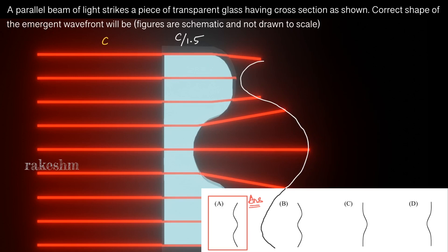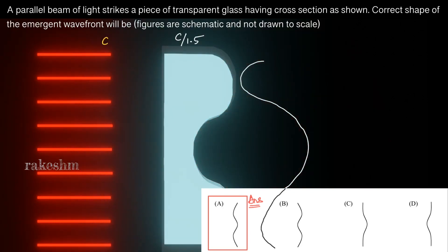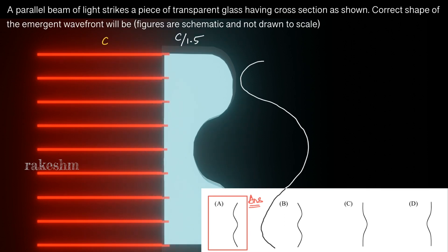One more question: in the exam, if he had said 'draw the possible wavefronts after the light strikes the plane surface of the glass' — so let us again visualize the path that the light rays take. Up till the point it enters the glass, we only had planar wavefronts, so a planar wavefront alone is not among the options.